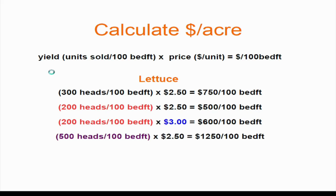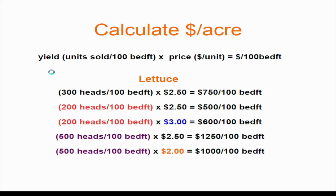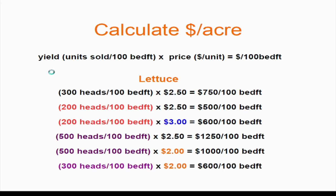You might choose to change your planting density — going to five rows per bed means a lot more heads. At the same price you'd be making $1,250, something like $90,000-$100,000 an acre. But maybe the heads are smaller because they're grown so tight, or you choose smaller varieties, so you have to charge a bit less. That brings you down to $1,000 per 100-foot bed — still twice as much as before. But again, you may not manage to harvest everything.